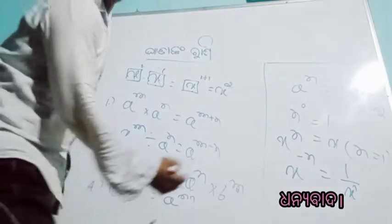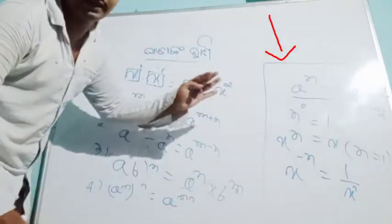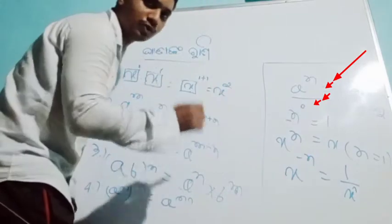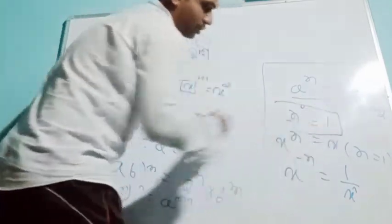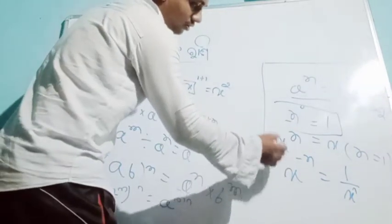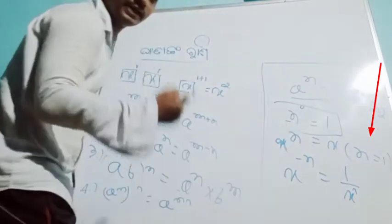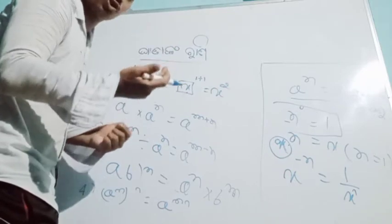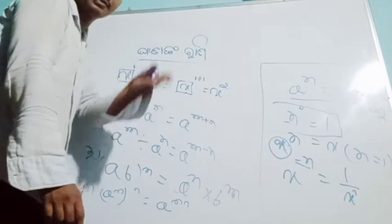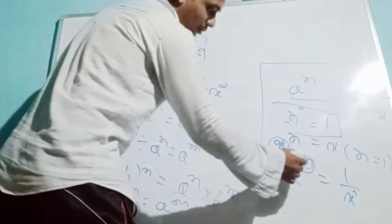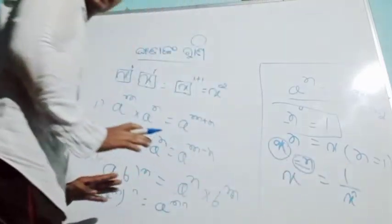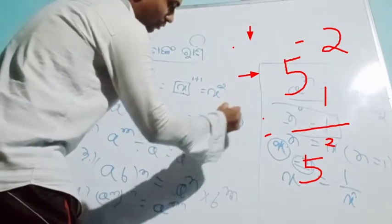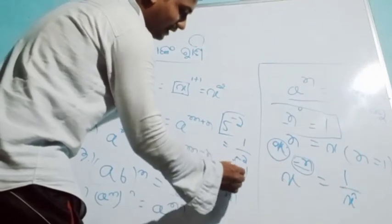We have to see the table A to the power N. 5 minus 2 is equal to 1 by 5, plus 2 is equal to 1 by 25.